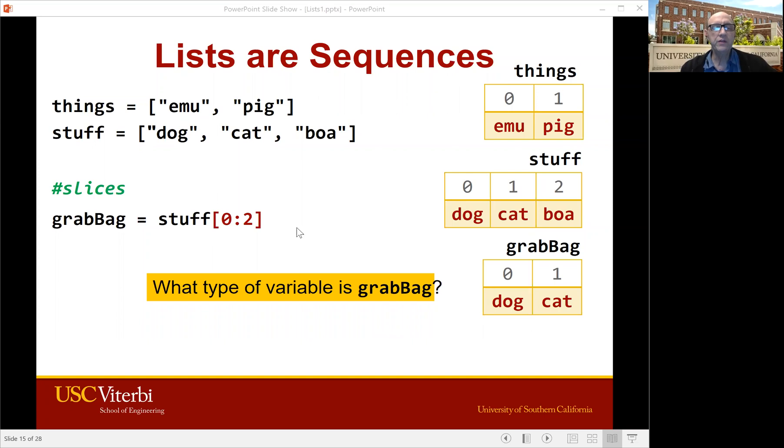We can also use the slicing syntax that we had with strings. So instead of a single number in here, we're going to go number colon number. So stuff number zero colon two, let's see stuff zero to two. But remember it goes up to, but not including. So that should just be dog and cat. So grab bag is going to get assigned the list, which is just dog and cat. And grab bag as a slice of a list of strings is a list of strings.